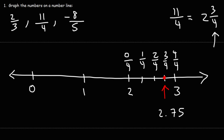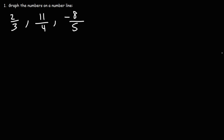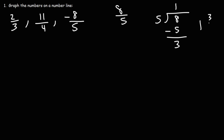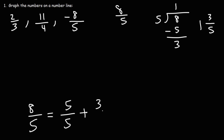Now let's move on to negative 8 over 5. Let's ignore the negative for now and convert 8/5 into a mixed number. How many times does 5 go into 8? Once. Five times 1 is 5, and 8 minus 5 gives a remainder of 3. So we have 1 as our integer and 3 as the numerator, with 5 remaining in the denominator — giving us 1 and 3 fifths. You can also see this as 5/5 + 3/5, where 5 divided by 5 is 1, and 1 plus 3/5 is 1 and 3 fifths.